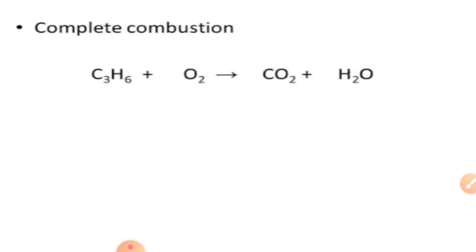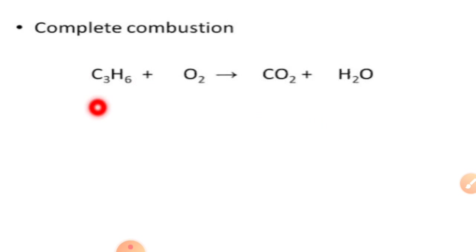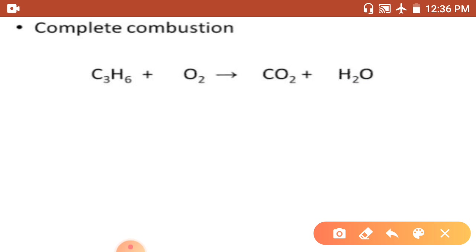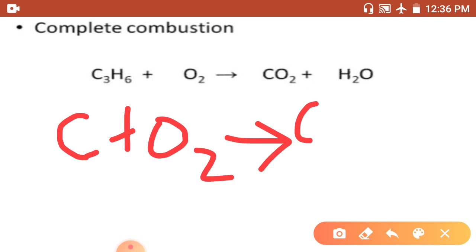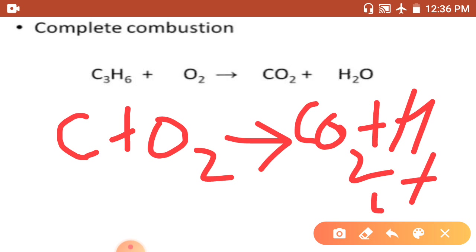Complete combustion is the combustion in which the substance gets completely burned to form the highest oxide of the substance. For example, when propane burns with sufficient oxygen, it is completely burned. Another example: when carbon burns completely, it gives carbon dioxide along with heat and light.